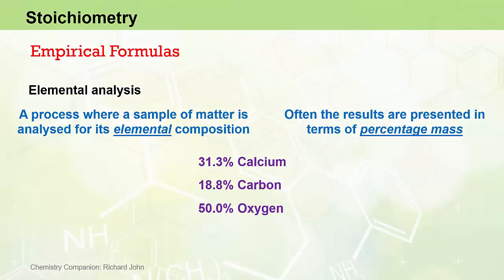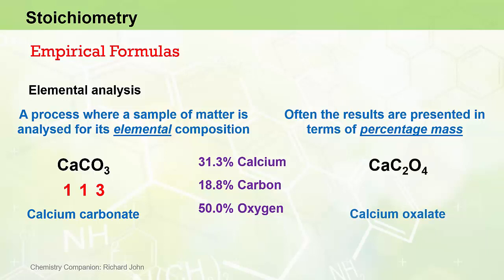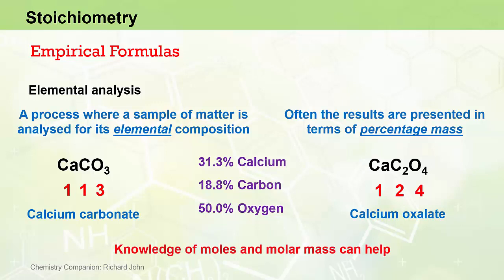There are at least two compounds that could contain calcium, carbon and oxygen. One of them is calcium carbonate, where the ratio of calcium to carbon to oxygen is 1 to 1 to 3. Another compound it could be is calcium oxalate, where the ratio is 1 to 2 to 4. So the data from an elemental analysis can't tell us directly what the correct ratio is and therefore what the compound is, but we can use our knowledge of moles and molar mass to determine the empirical formula and therefore the chemical formula.